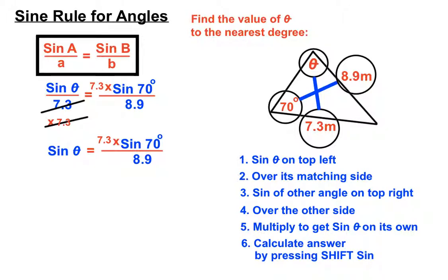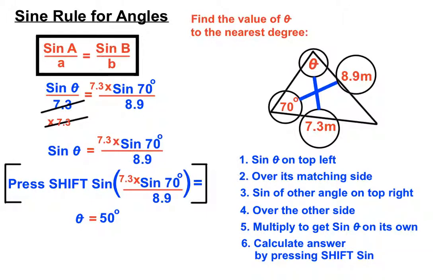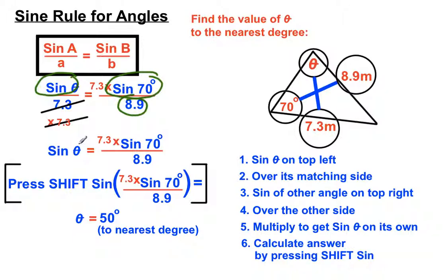Now we need to calculate our answer. Since we're finding an angle, we need to press shift sine on the calculator to work backwards and find the angle. So we press shift sine, put the whole right-hand side in carefully, close the bracket, and press equals. We get theta equals 50 degrees, rounded to the nearest degree.